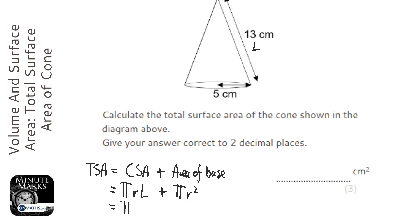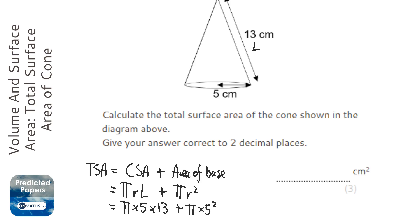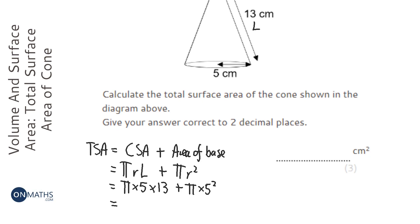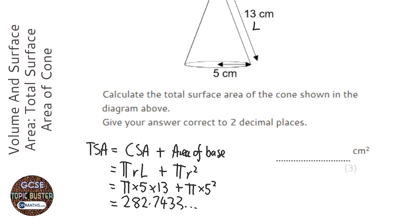So we're going to do π times the radius, which is 5, times the slanted height, which is 13, plus π times the radius squared, which is π times 5 squared. I'm going to type that into my calculator: π times 5 times 13 plus π times 25, which is 5 squared. And it gives me 282.74 centimeters squared.